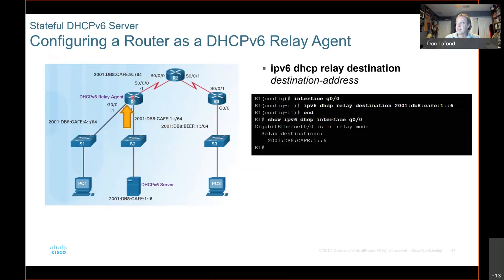The command is IPv6 dhcp relay destination and then whatever that destination address is. Use your question marks — you know it's a relay, it's IPv6 dhcp relay, put a question mark in there. Destination and then give it an address of the server — you're telling the router where the server is. Then to check that, do a show IPv6 dhcp interface G0/0, and you will see that that interface is in relay mode.